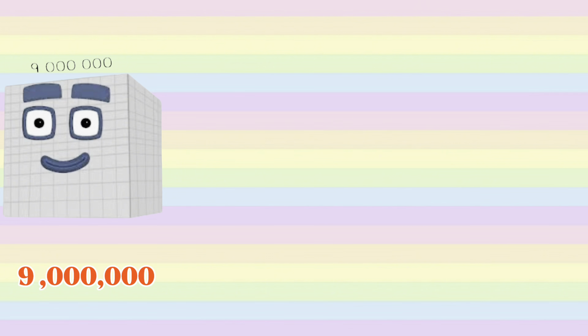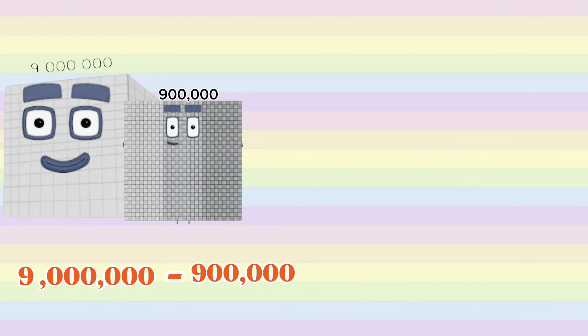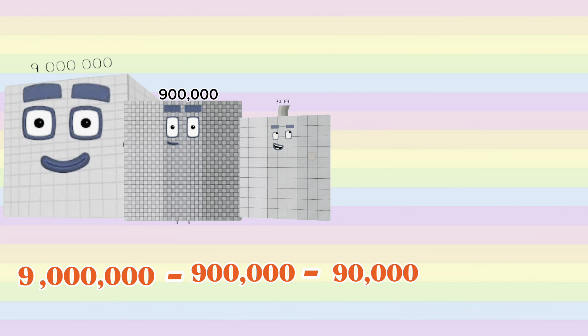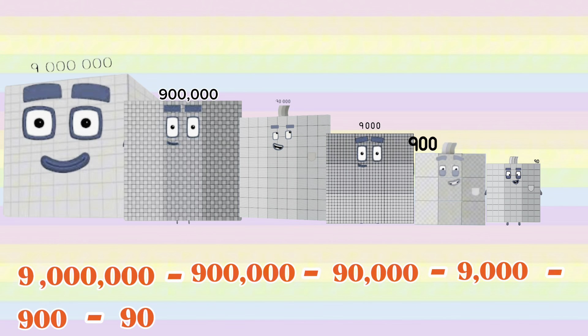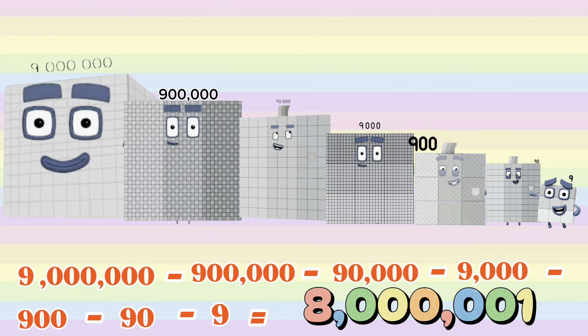9 million minus 900,000 minus 90,000 minus 9,000 minus 900 minus 90 minus 9 equals 8,000,001.